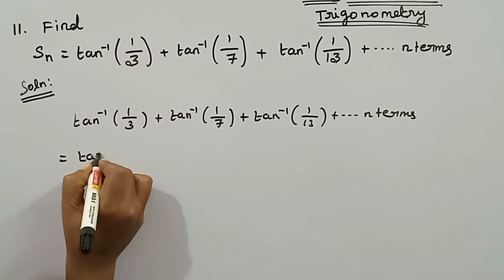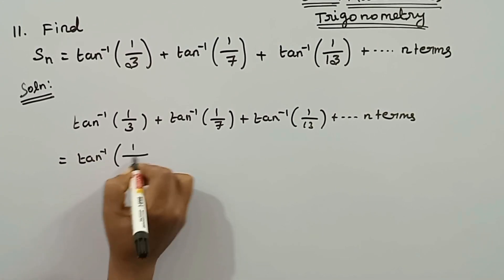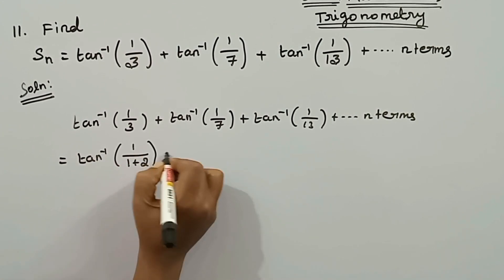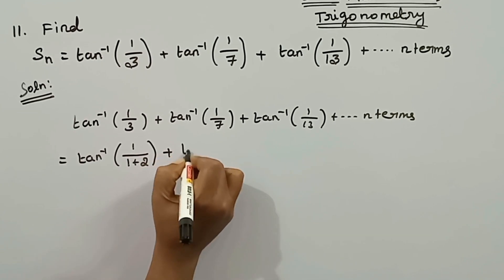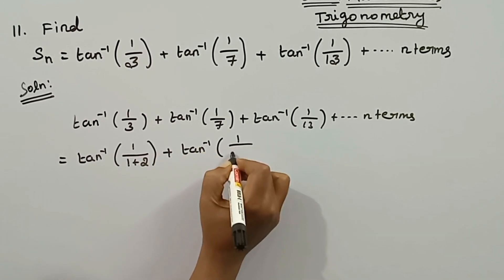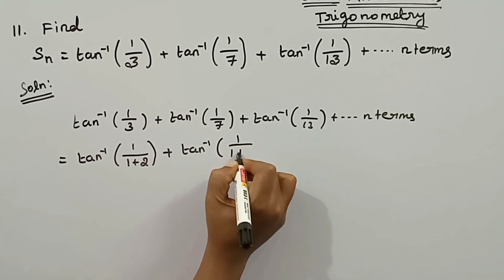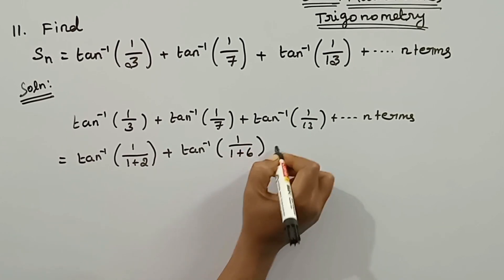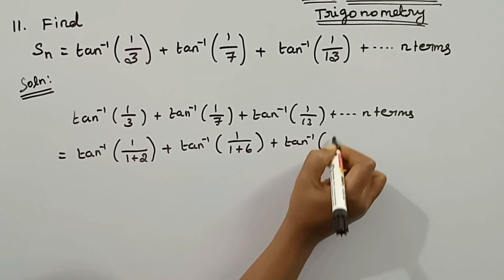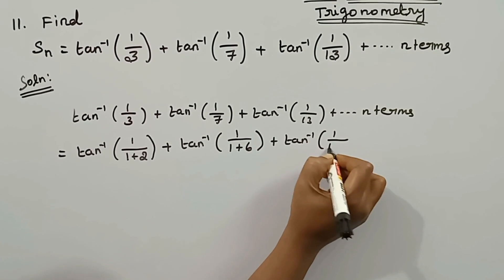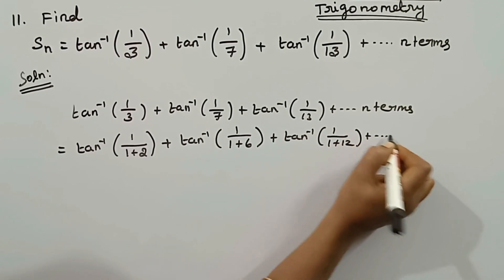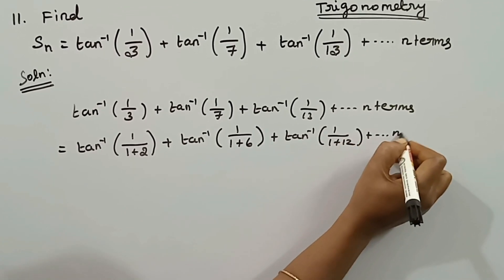We rewrite the denominators: tan inverse of 1 by 1 plus 1·2, then tan inverse of 1 by 1 plus 2·3, then tan inverse of 1 by 1 plus 3·4, and so on up to n terms.